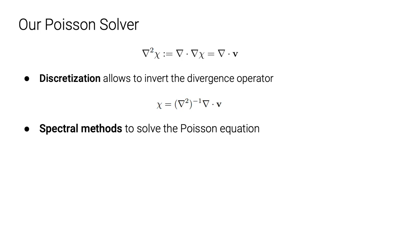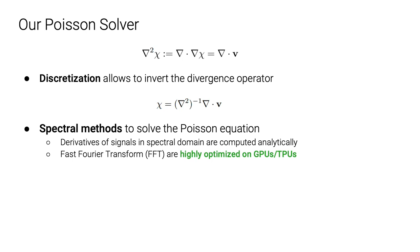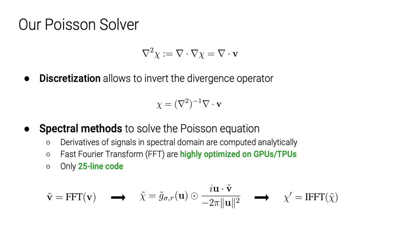In order to efficiently solve the Poisson equation, we choose to use spectral methods, which are commonly applied in scientific computing for solving PDEs. Spectral methods decompose the original signal into a linear sum of sine and cosine basis functions whose derivatives can be computed analytically. Importantly, spectral methods leverage fast Fourier transform operations that are well supported for GPUs, TPUs, as well as mainstream deep learning frameworks like PyTorch or TensorFlow. Moreover, the solver itself is extremely simple and can be implemented in only 25 lines of code. Here we simply show the final derivation of our Poisson solver; a step-by-step derivation can be found in our paper.